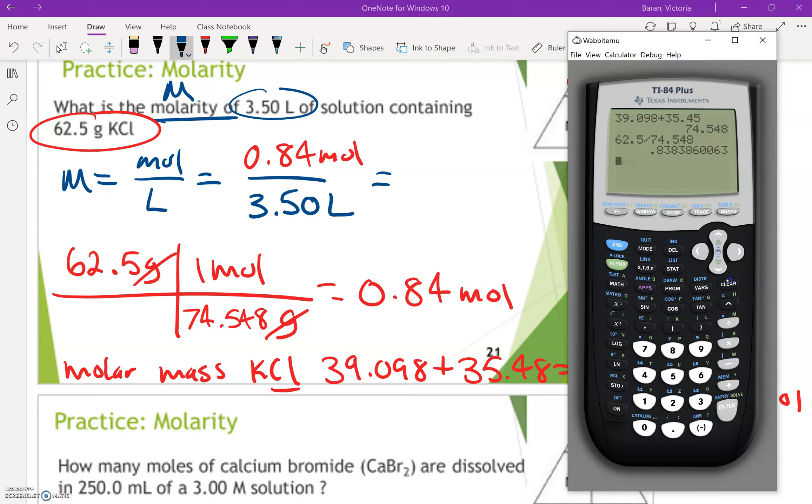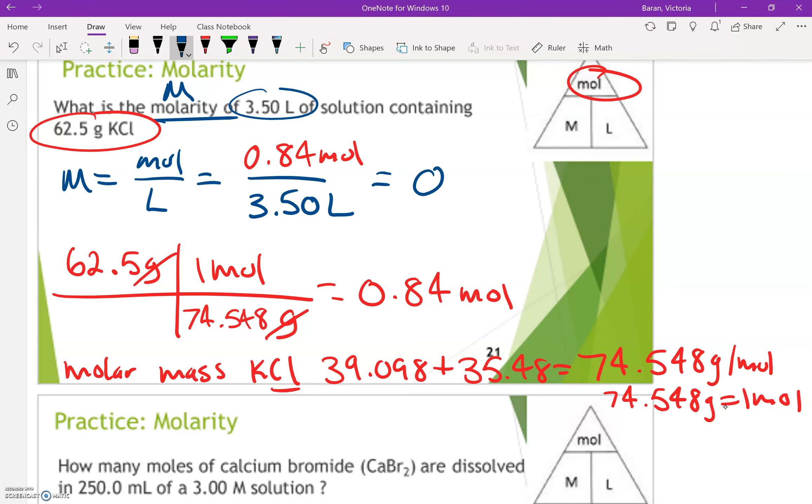So I'm going to go ahead and take that. Notice that I just hit divide. So ans is the previous answer in the calculator. So it's taking that decimal 0.838, that really long decimal, and I'm just going to divide that by 3.5. So then I just don't have to retype in that number again. Enter. So we're going to get 0.24 and then big M for molarity.